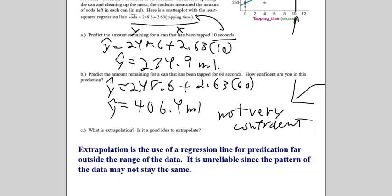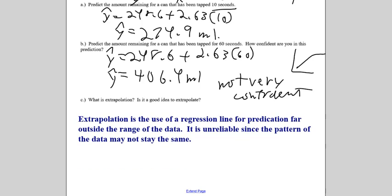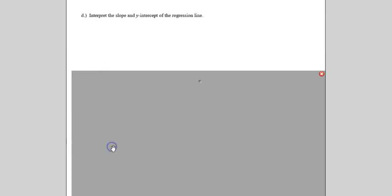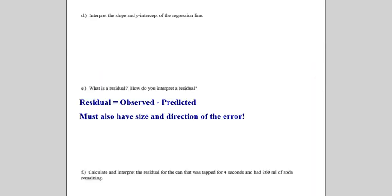So, what is extrapolation? And is it good to extrapolate? So, I'm going to copy this down. I'll pause it. Alright. So, we're going to be asked to interpret the slope and the y-intercepts. So, let's go back to writing. So, with the slope and the y-intercept regression, first off, let's copy the information over from the previous page. So, y-hat equals 248.6 plus 2.63x.